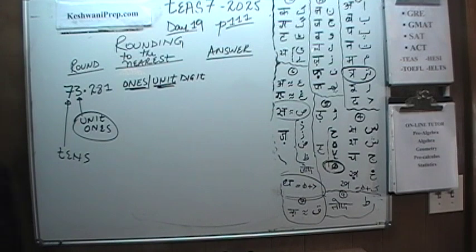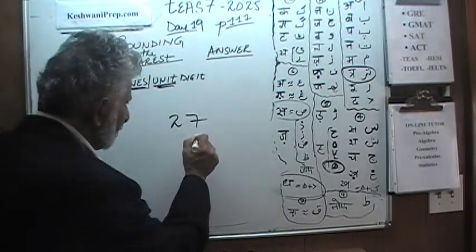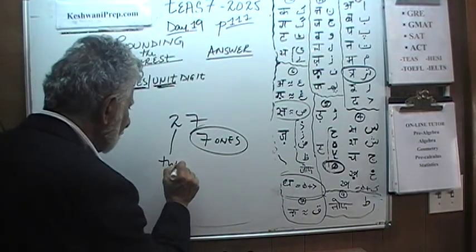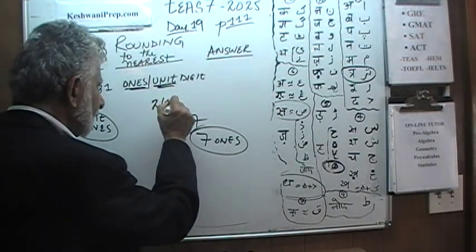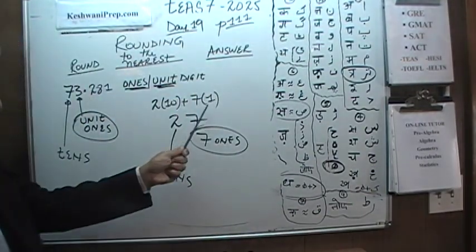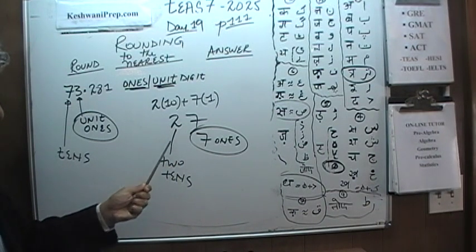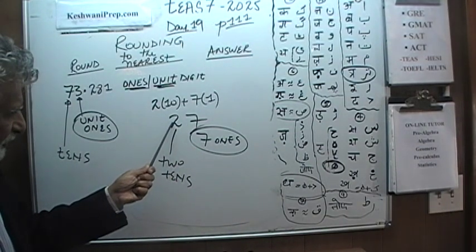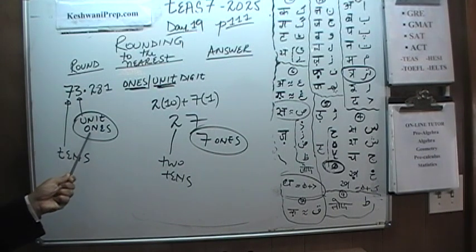It is called ones digit because that digit tells us how many ones we have. For example, in 27: 27 is made up of 7 ones and 2 tens. This tells us how many tens we have — 2 tens, 2 times 10 is 20, plus 7 ones. This is called the tens digit; we have 2 tens and 7 ones. The 7 is the unit digit, or ones digit — this is what we have been asked to round.